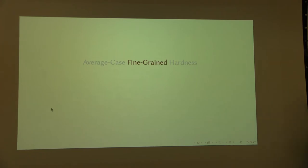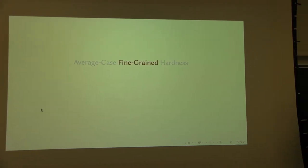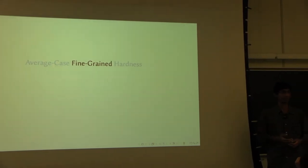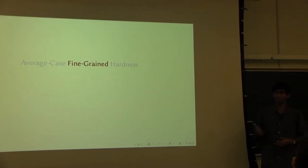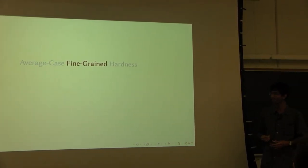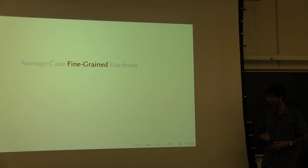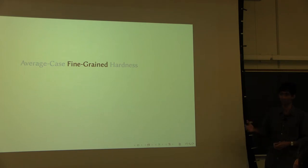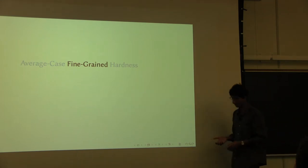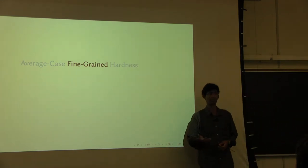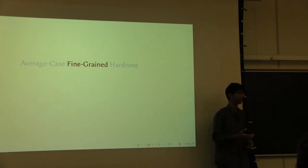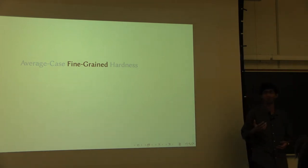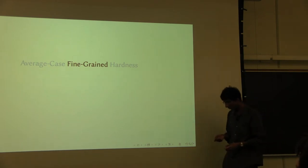What is fine-grained complexity? We know complexity theory — you study the complexity of problems. You ask which problems can be solved efficiently and which problems cannot. Usually the notion of efficiency you use is polynomial time. You say that a problem can be solved efficiently if it can be solved in polynomial time, and there are lots of good reasons for doing this, because polynomials compose together nicely. But in a lot of cases, you want to know more.